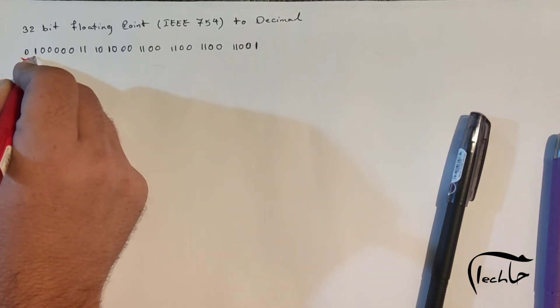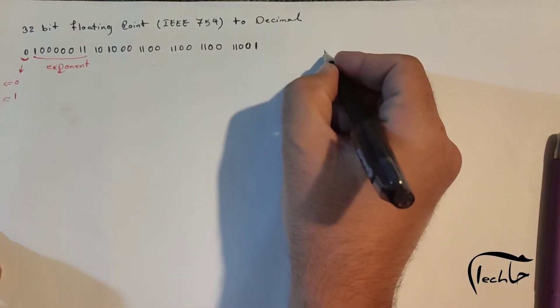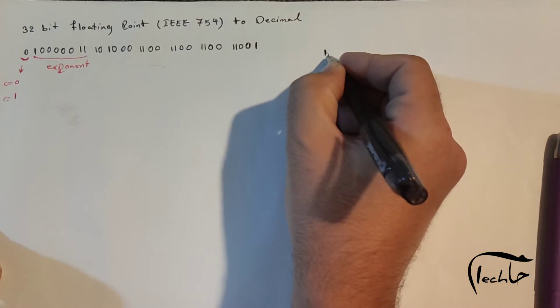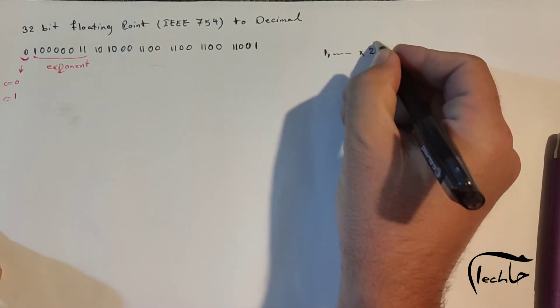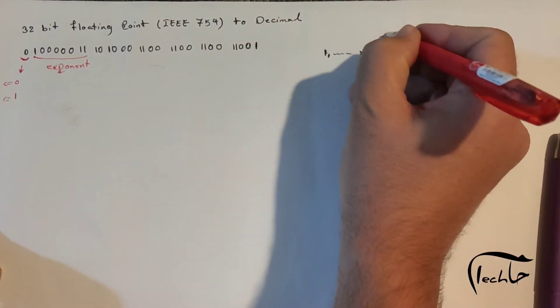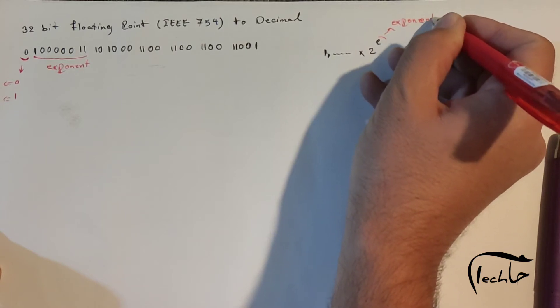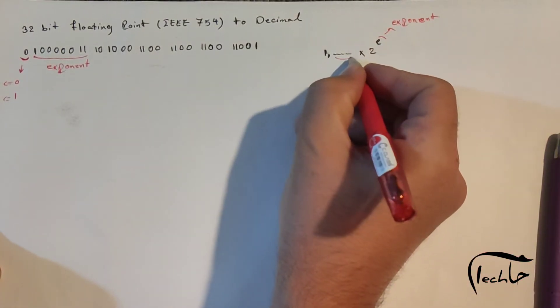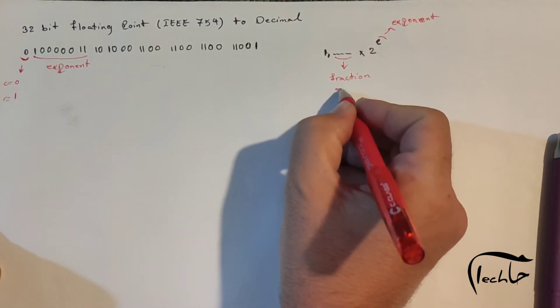The next 8 bits are exponent: 1, 2, 3, 4, 5, 6, 7, 8. In the scientific notation, we write a number where the power is the exponent and the fraction section is the mantissa.